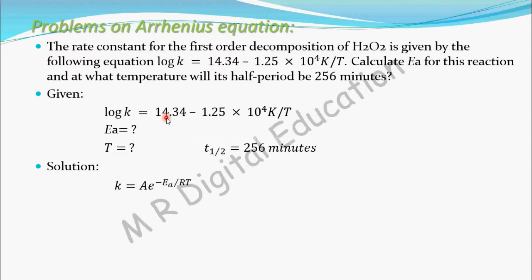This given equation looks similar to the Arrhenius equation — K and T terms are present. You know the Arrhenius equation. Let's try to form the Arrhenius equation in log form. Since we have log to the base 10, take log to the base 10 on both sides. So log K = log(A · e^(−Ea/RT)).